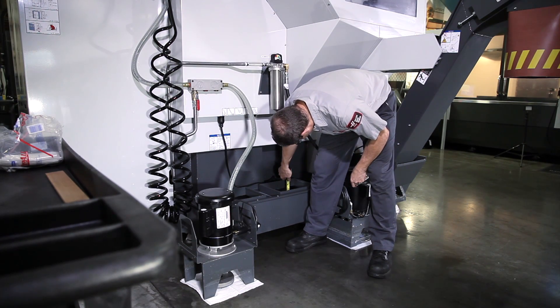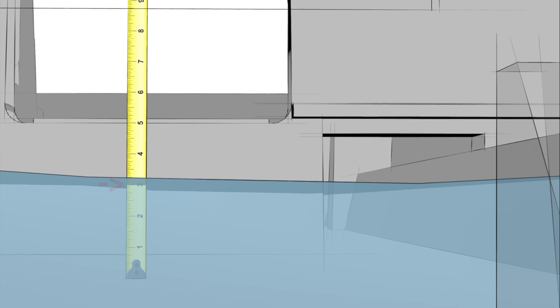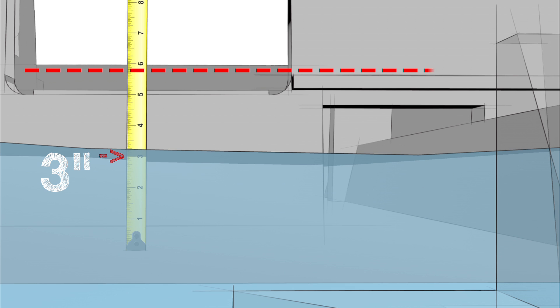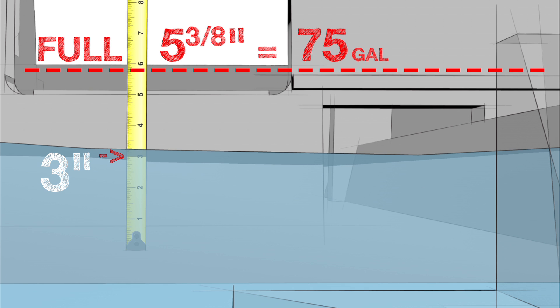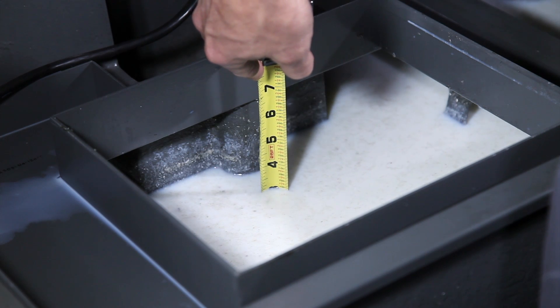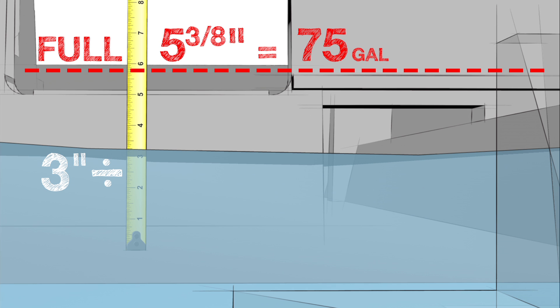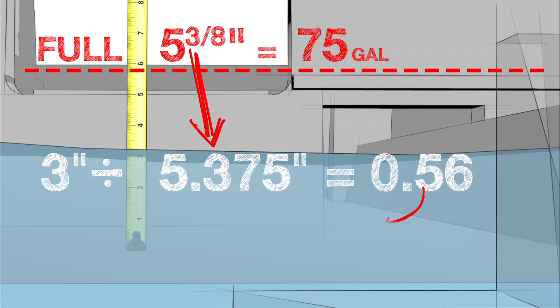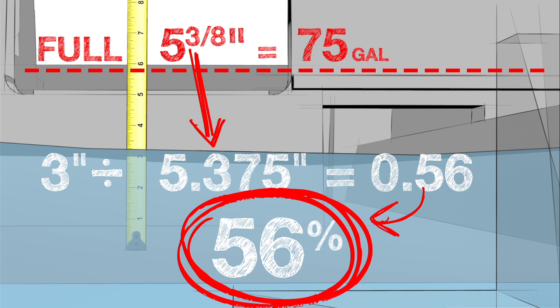Measure the coolant level. Our measurement is three inches. When this integral 75 gallon tank is full, the coolant level reaches five and three eighths inches. We divide our measurement of three inches by the 5.375 inch tank full value. This equals 0.56, so this means 56 percent of the coolant remains in the tank.